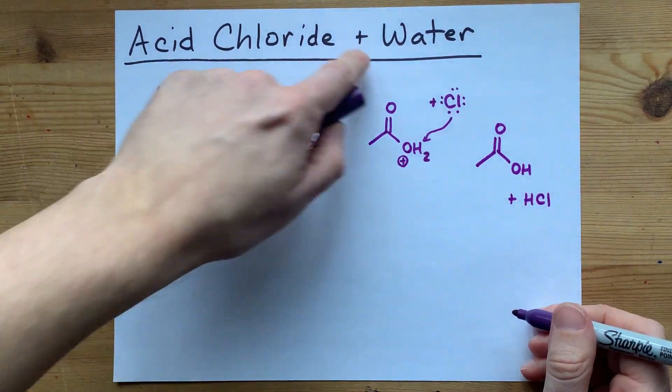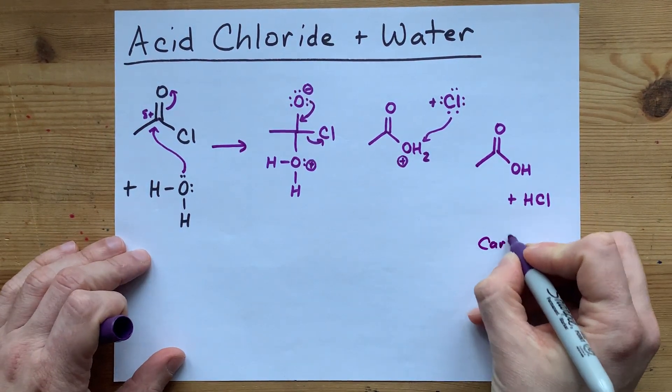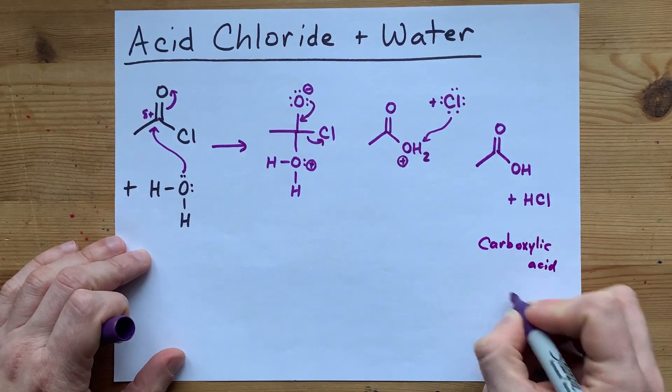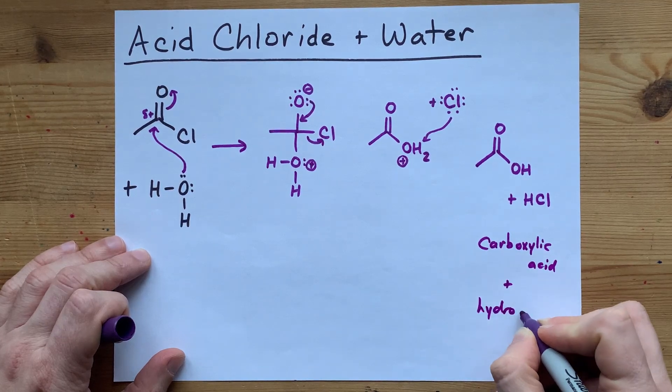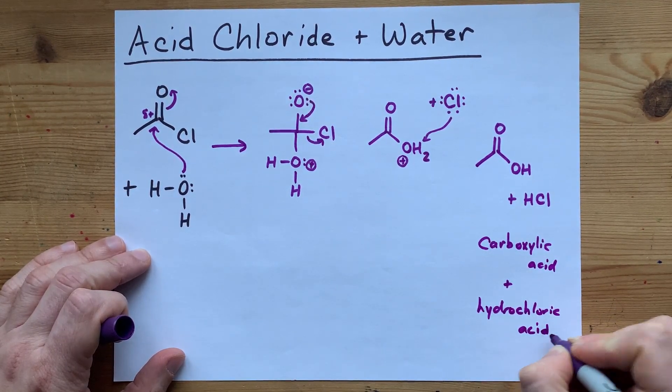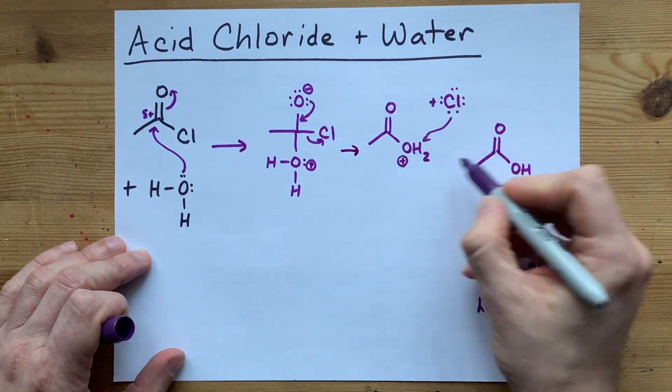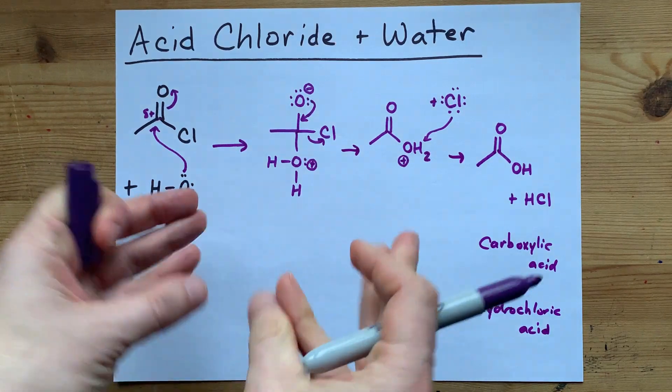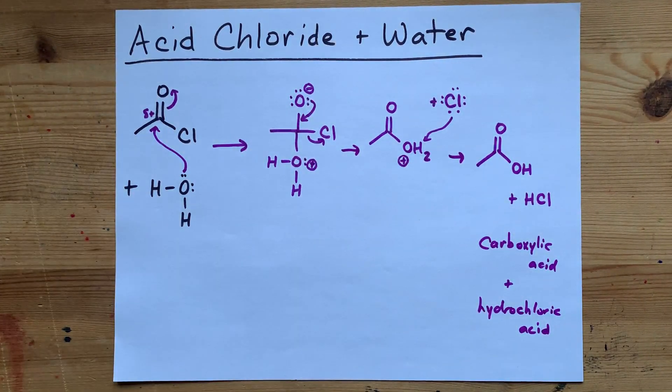So the acid chloride plus the water end up forming a carboxylic acid plus hydrochloric acid in the end. Now those are two very stable products, and the whole thing is very exothermic, gives off a lot of heat, and spontaneous. Happens very quickly, even if the water is cold.